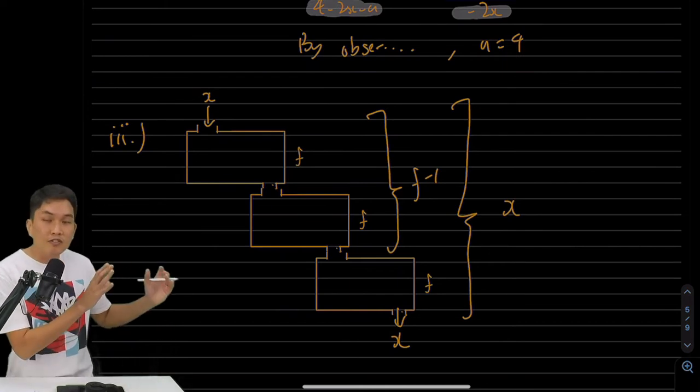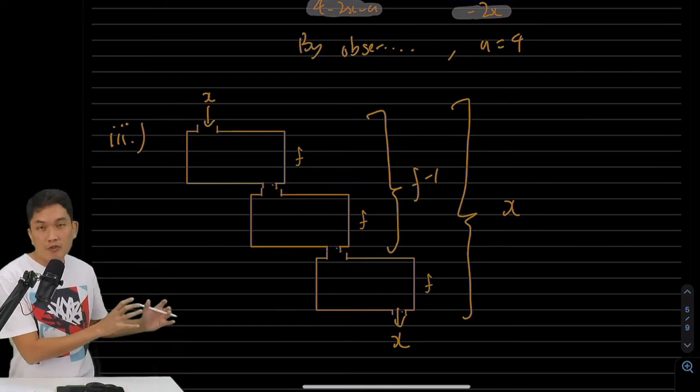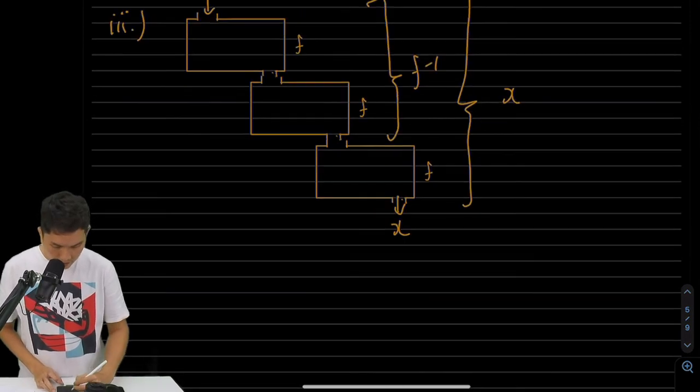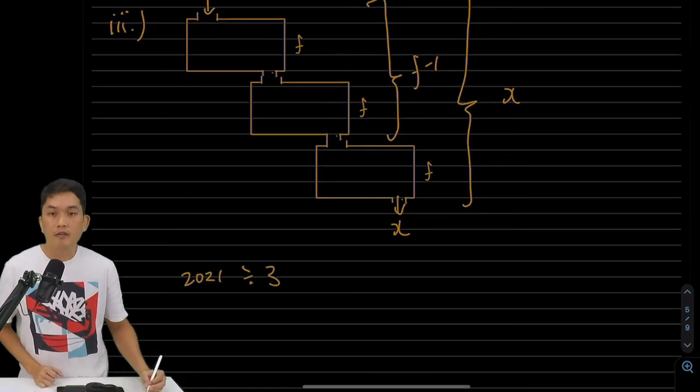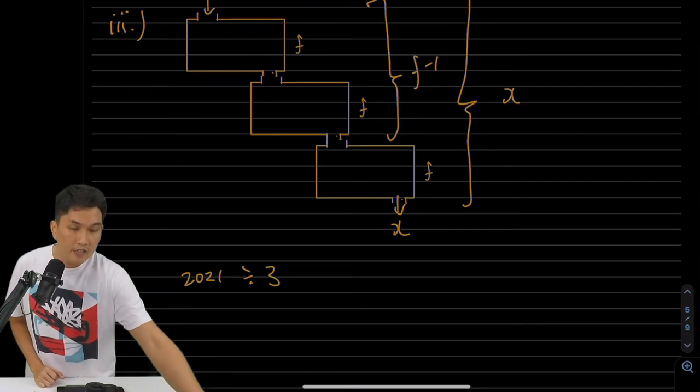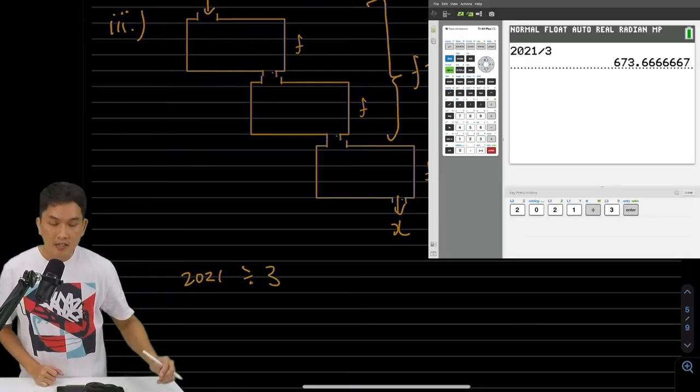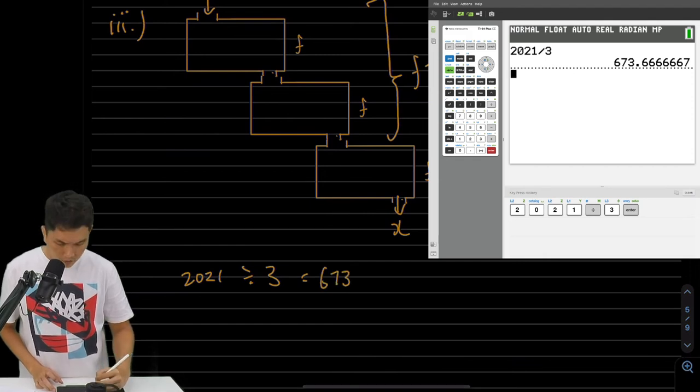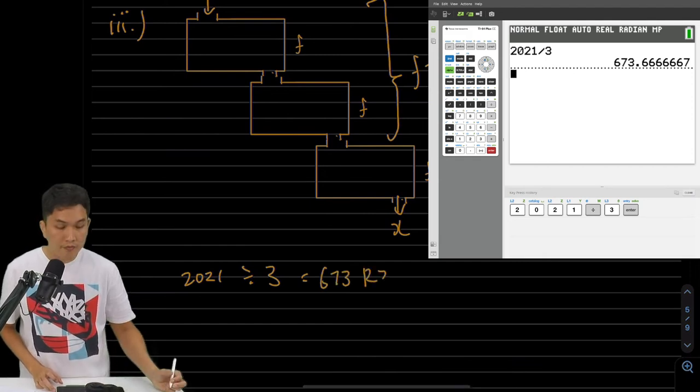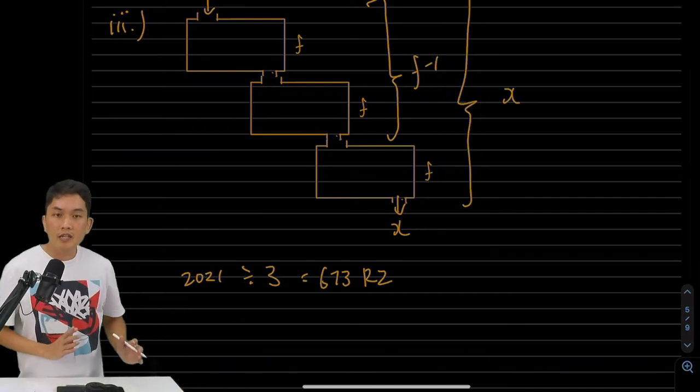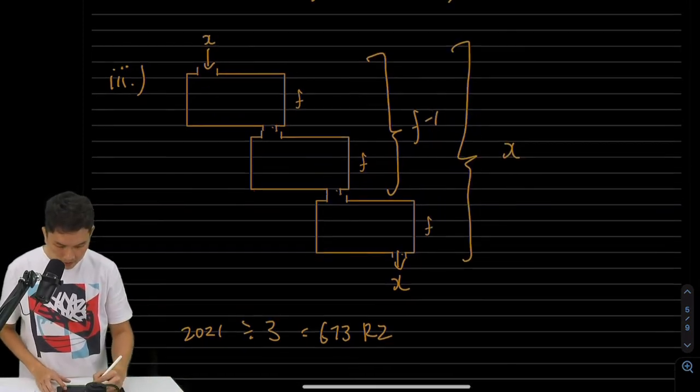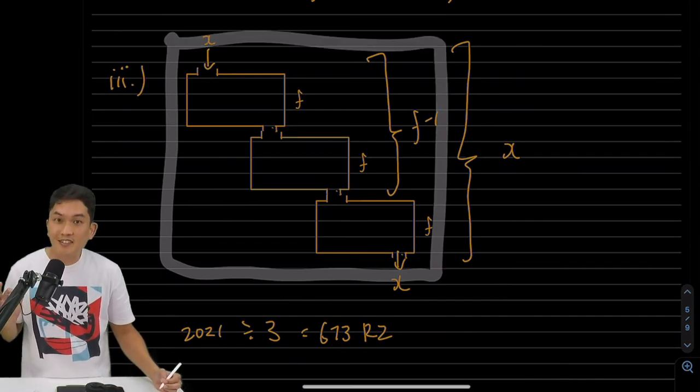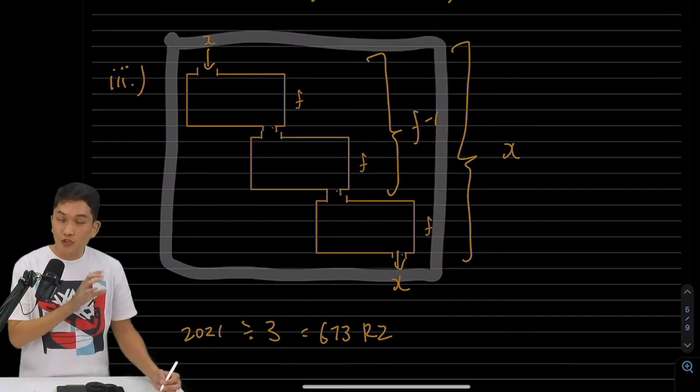So we want to find out in 2021, how many groups of three are there? How many sets of three are there? So what you can do is take 2021 and we divide by 3, and I've already done that on the calculator over here. That is equals to 673 and 2 thirds, which means remainder 2. So what that means is that I will have 673 groups of this doing nothing at all. And what I have left is just two more fs.